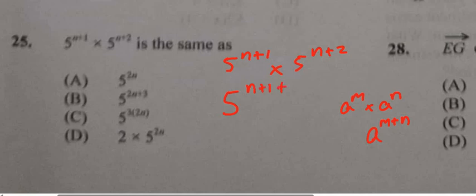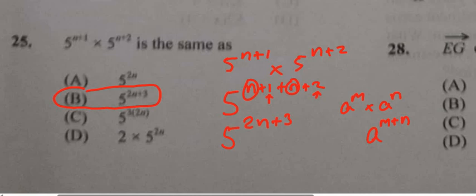All right, let's simplify that. The n plus n, that's going to give us 2n, and the 1 plus 2, that's going to give us a positive 3. And so the answer is B, 5 to the power of 2n+3, which is what we're seeing here.